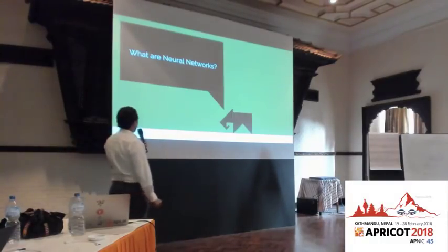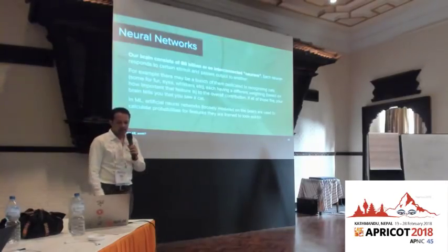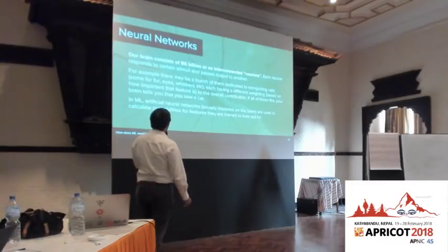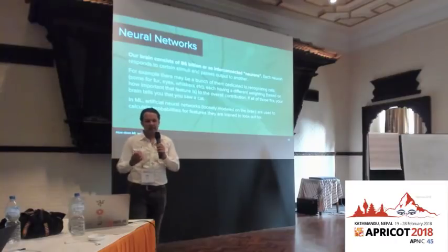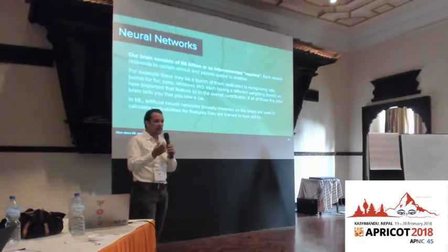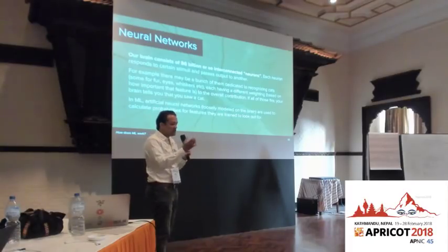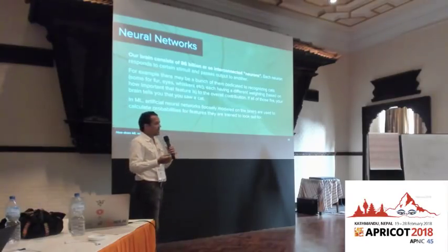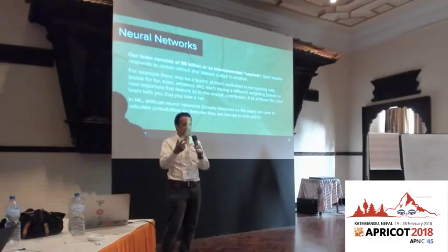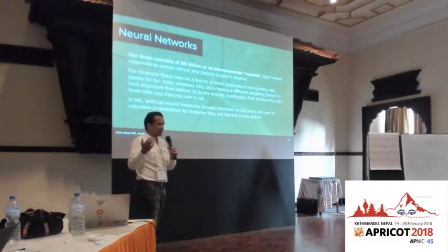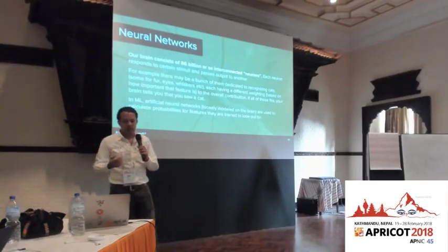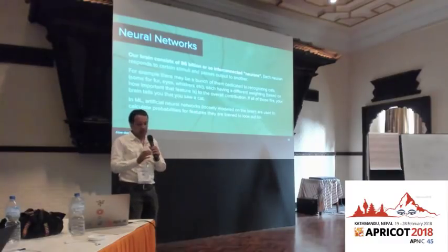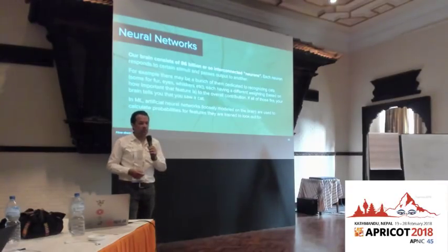That brings us to neural networks. Our brain consists of about 86 billion interconnected biological neurons. Each cluster responds to certain stimuli — when you see some fur, a bunch of neurons fire and get excited. If you see ears, another bunch fire. If you see eyes, same thing. If all of those fire at the same time — ears, fur, and eyes — maybe you've seen a cat's face, and your brain tells you 'I've seen a cat.' In machine learning, artificial neural networks, very loosely modeled on the brain, work similarly, calculating probabilities that respond to certain features they see in the imagery or data presented to them.